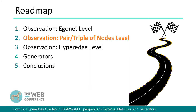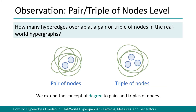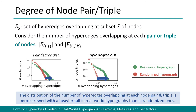Now let's move on to our second level of observation. Here we try to answer: how many hyper-edges overlap at a pair or triple of nodes in real-world hypergraphs? While the degree of a node in a hypergraph is defined as the number of hyper-edges overlapping the node, we extend the concept to pairs and triples of nodes. We measured the distributions of the number of hyper-edges overlapping at each pair or triple of nodes. Compared to random hypergraphs, the distributions in real-world hypergraphs are more skewed with a heavier tail, and we observe that the distribution follows a power-law distribution.